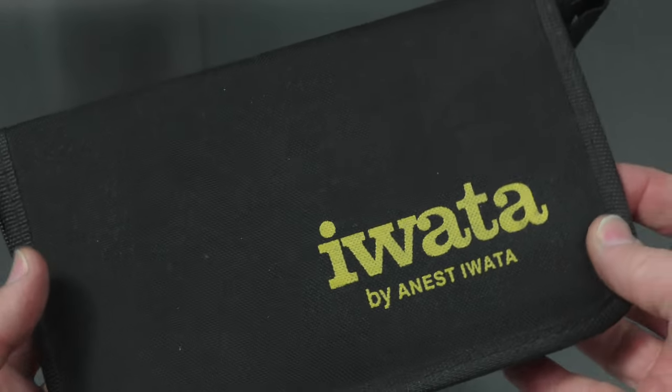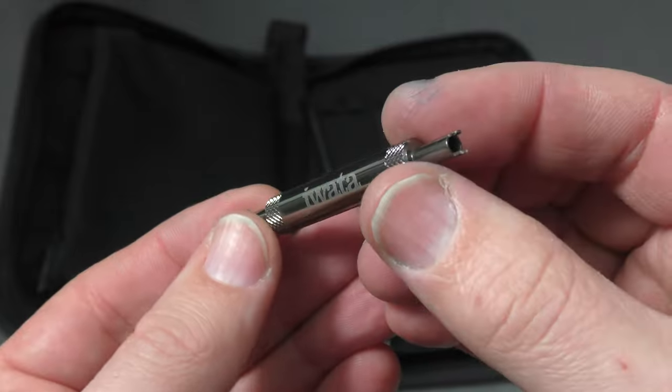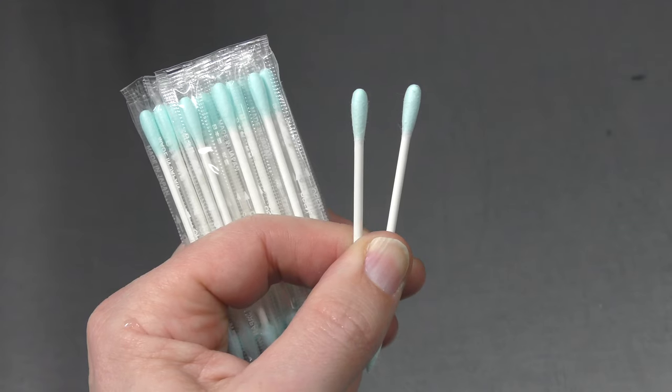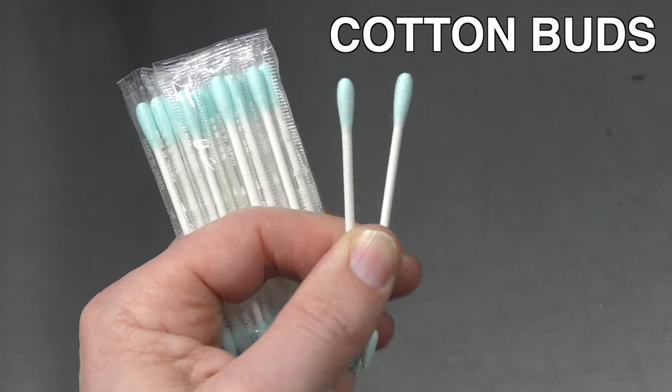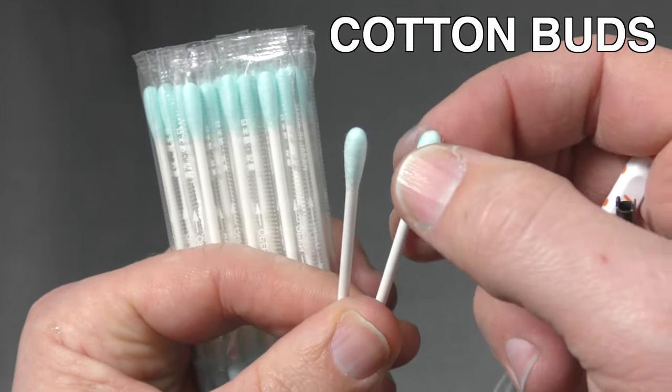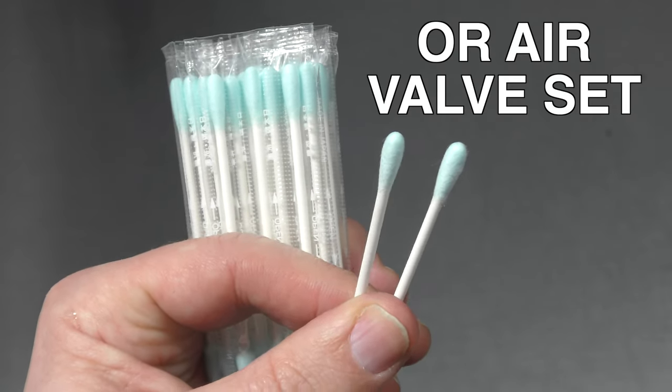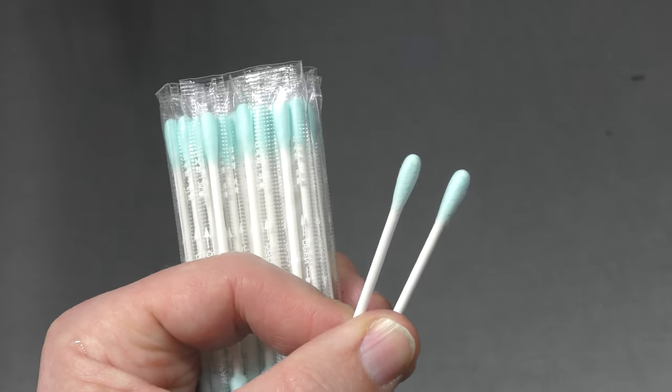I'm also going to be using the Iwata maintenance kit. It comes with some really handy tools and the tool that I'm going to need is this particular one here. I'm also going to be using some Q-tips. Just be wary that we want to make sure that none of that fluff gets caught up in that plunger assembly section otherwise we're going to have the same sticky trigger issue later.